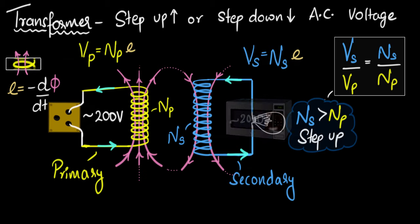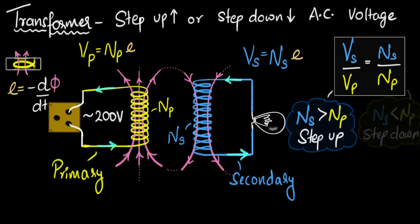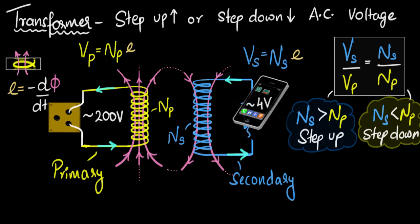On the other hand, if the number of turns in the secondary is smaller than the number of turns in the primary, notice the voltage in the secondary would be smaller than the supply voltage or the voltage in the primary, we get step down a transformer. And that's what you would use if you wanted to charge your mobile phone, because it requires a very tiny voltage. The AC supply gives you a lot, so you step it down appropriately by reducing the number of turns.